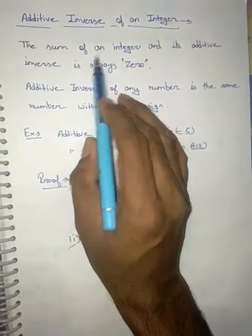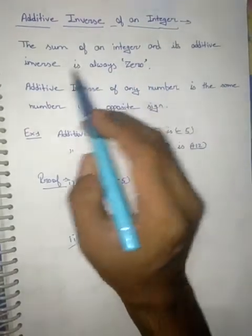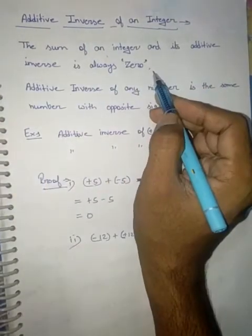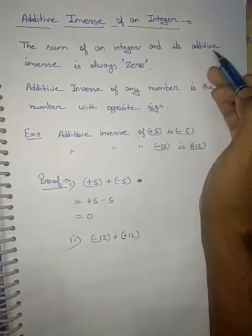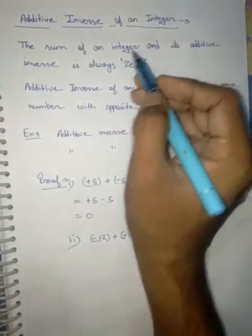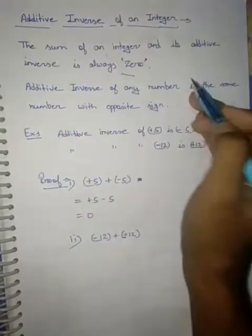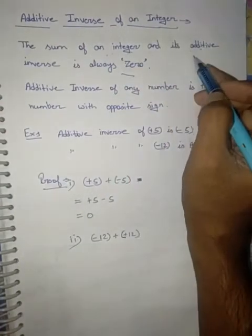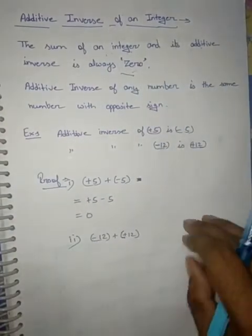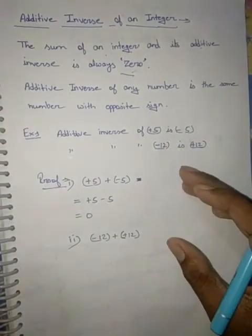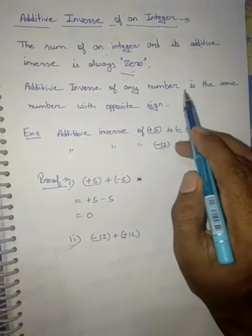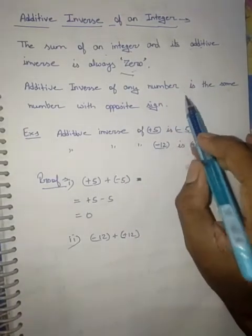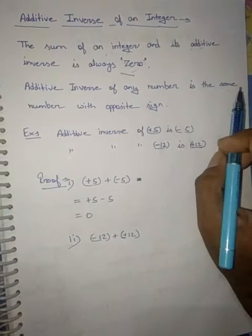The sum of an integer and its additive inverse is always 0. Additive inverse of any number or any integer is the same number with the opposite sign. Are you getting my point?